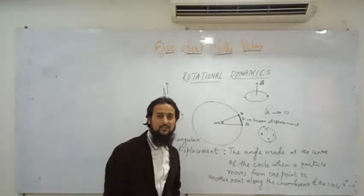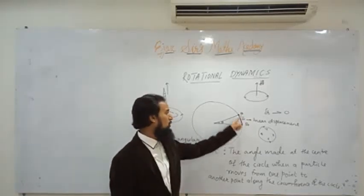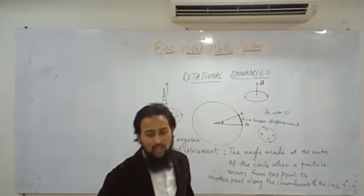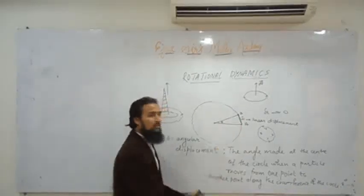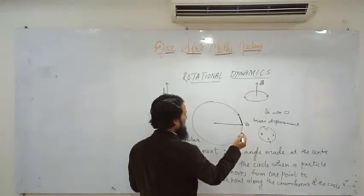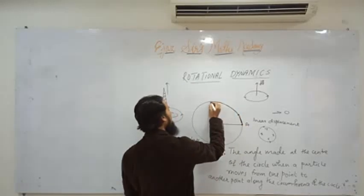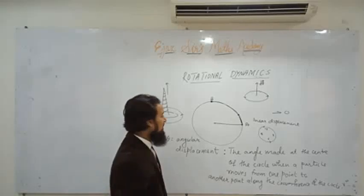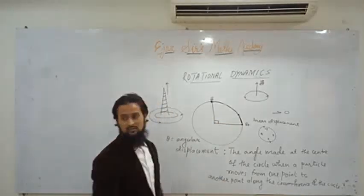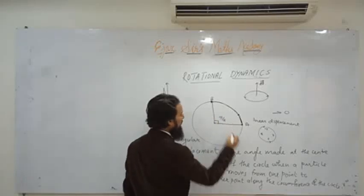Angular displacement is the angle made at the center of the circle when a particle goes from one point to another along the circumference. For example, if a particle goes from point A to point B covering a quarter circle, its angular displacement is 90 degrees, or π/2 radians.